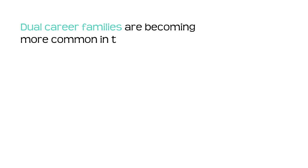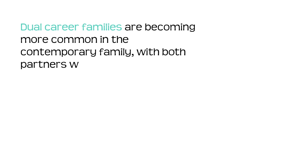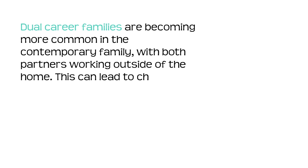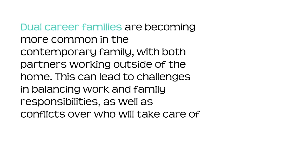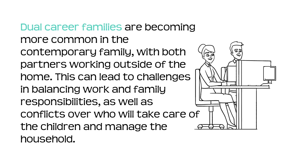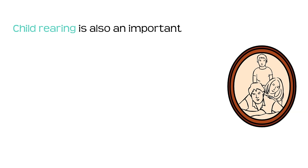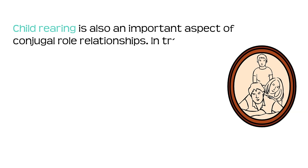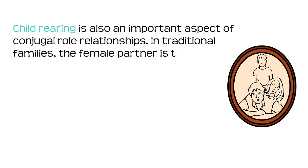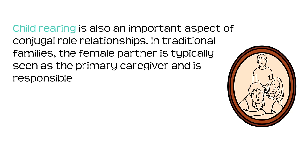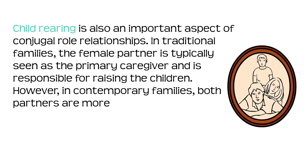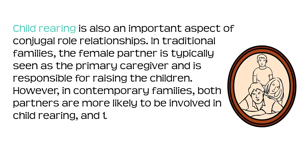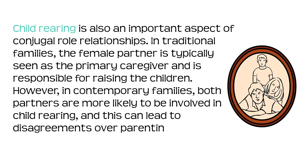Dual career families are becoming more common in the contemporary family with both partners working outside the home. This can lead to challenges in balancing work and family responsibilities, as well as conflicts over who will take care of the children and manage the household. Child rearing is also an important aspect of conjugal role relationships. In traditional families, the female partner is typically seen as the primary caregiver and is responsible for raising the children. However, in contemporary families, both partners are more likely to be involved in child rearing, which can lead to disagreements over parenting styles and decisions.